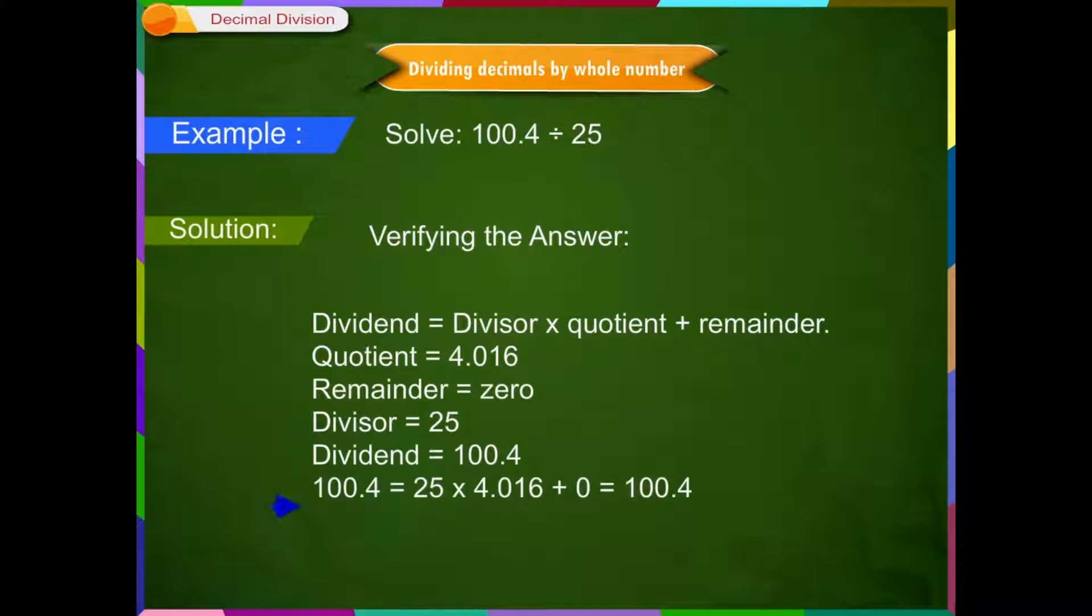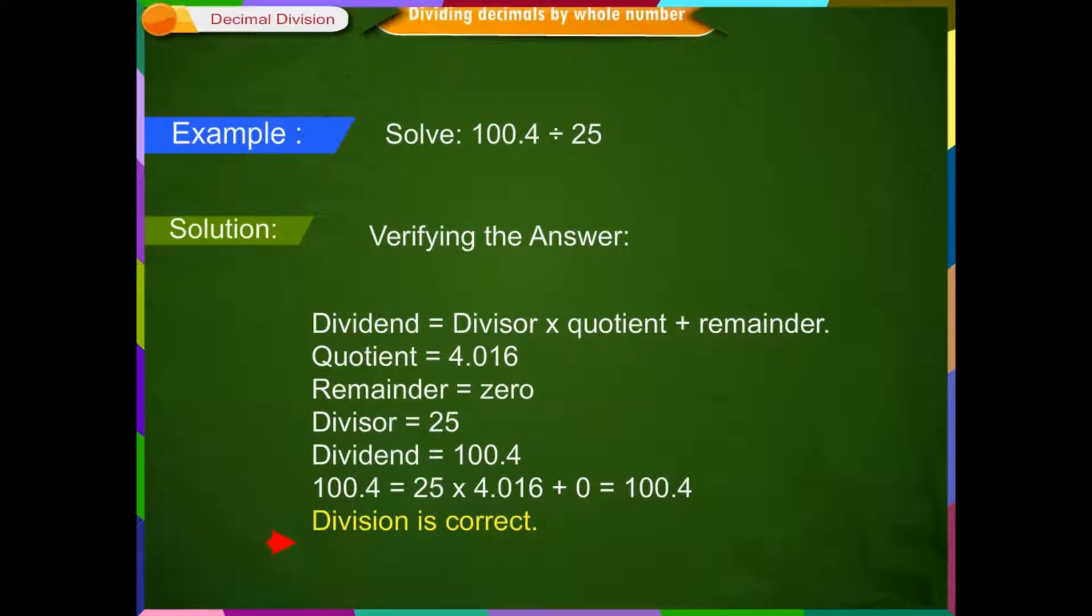Putting all these values in the rule, we get 100.4 is equal to 25 into 4.016 plus 0 is equal to 100.4. Since LHS is equal to RHS, so the division we performed is correct.